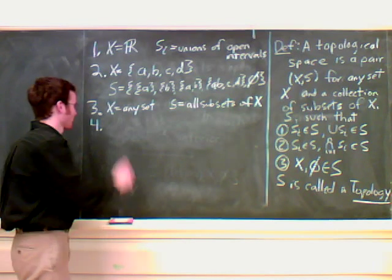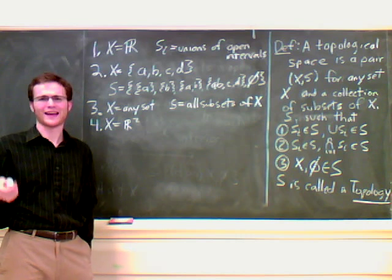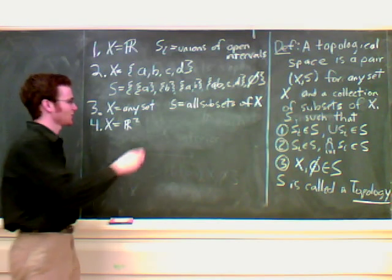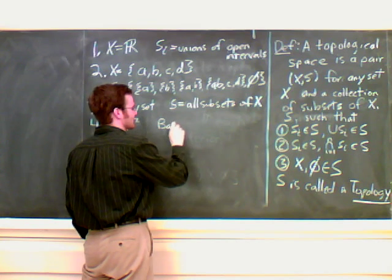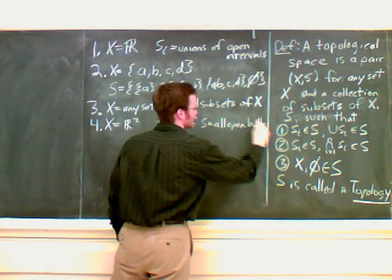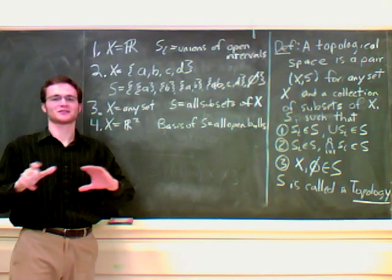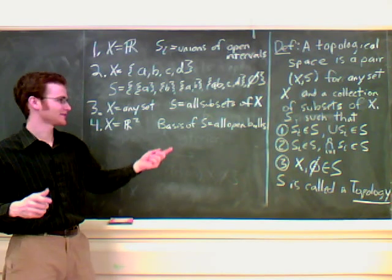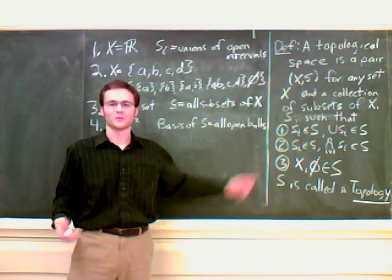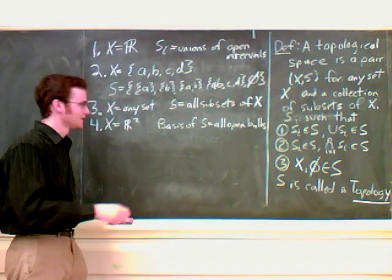Number four, the fourth example. Here, we use X equals R^2. And this really works for any R^n, right? But here what we're going to do is, it's a little harder to actually talk about what these things are. But here we're going to say the basis of S is all open balls. To explain that, first of all, the basis is all the other open sets are the unions and intersections of these open balls. And so that's going to clearly satisfy one and two just by definition. That's what it means for it to be a basis.